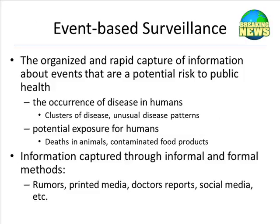Slide 28: Event-based surveillance organizes a rapid capture of information about events that are a potential risk to public health — the occurrence of disease in humans as clusters or unusual disease patterns, and potential exposures such as deaths in animals or contaminated food products. Information is captured through informal and formal methods: rumors, printed media, doctors' reports, social media, etc.